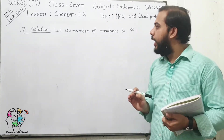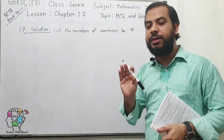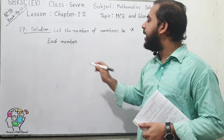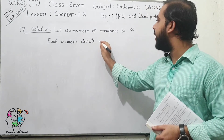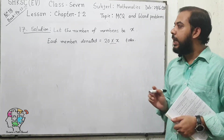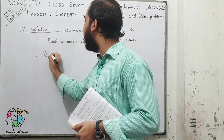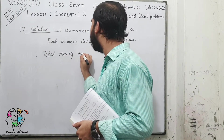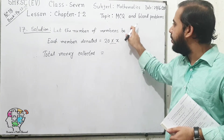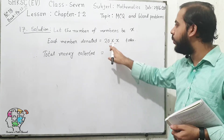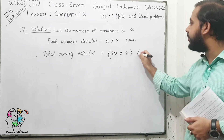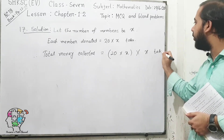There are X number of members. Every member donated 20 times X Takas. The total money collected equals the number of members times the amount per member. Since each of the X members donated 20X Takas, we multiply X by 20X. So the total amount collected is 20X squared.